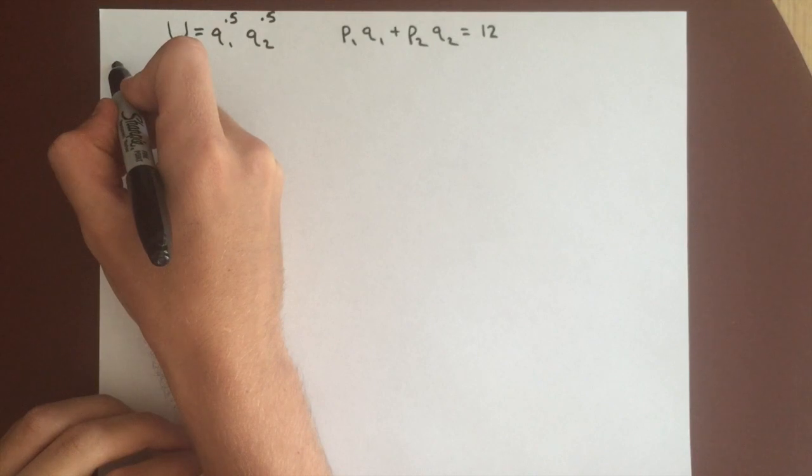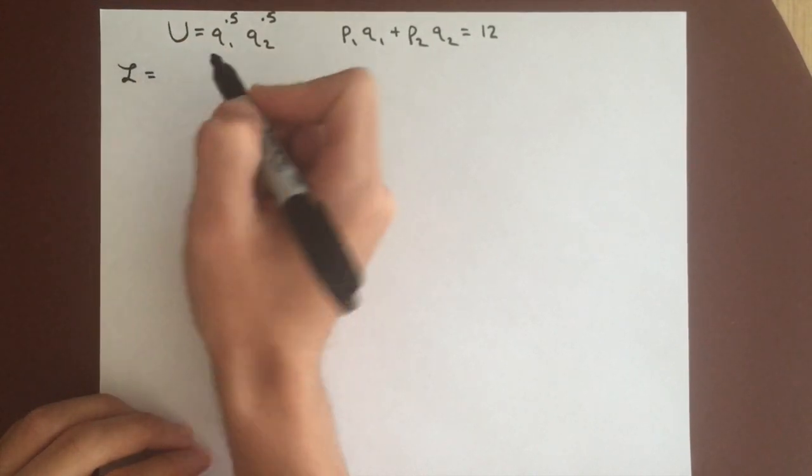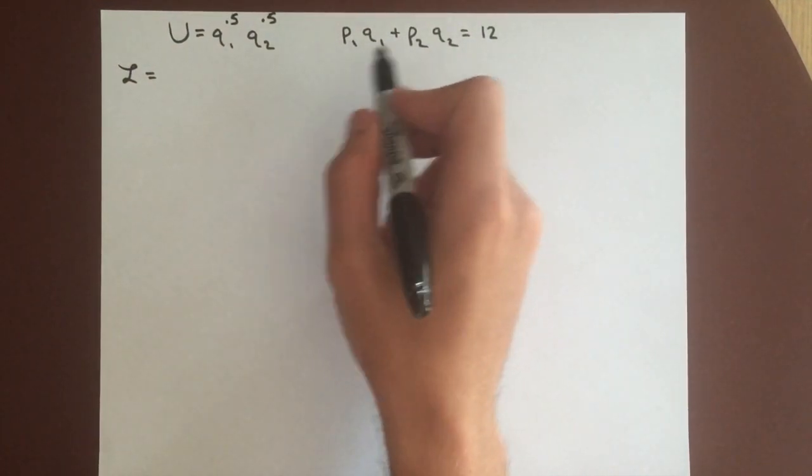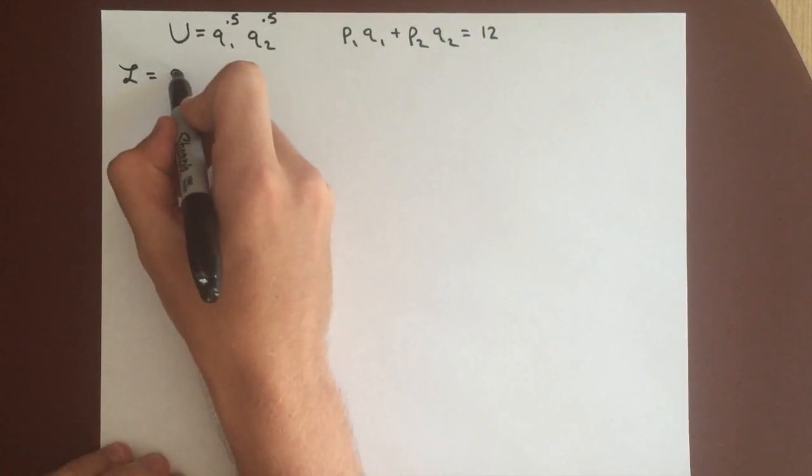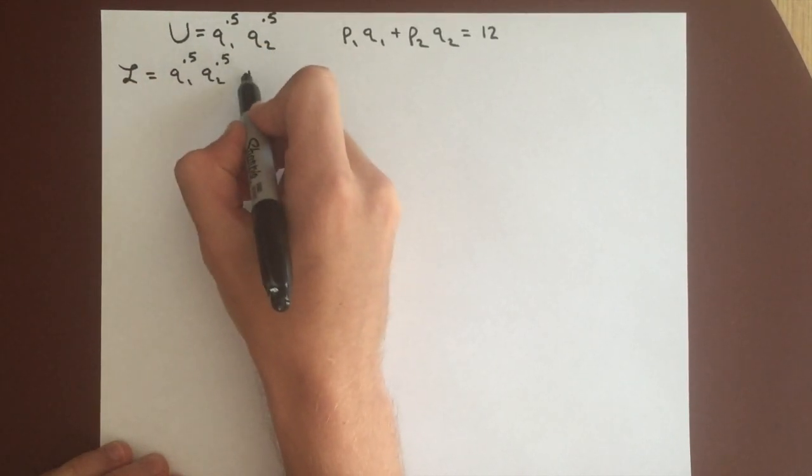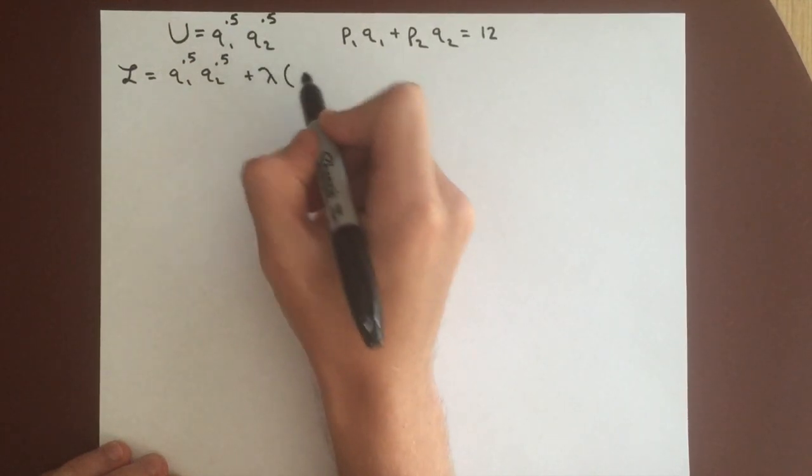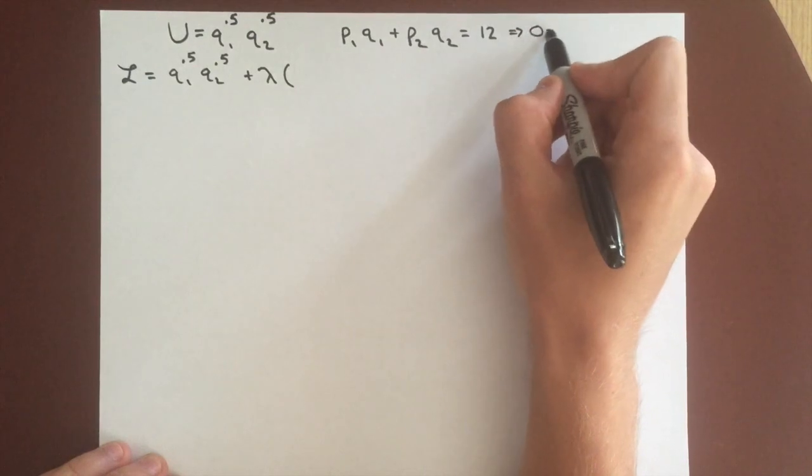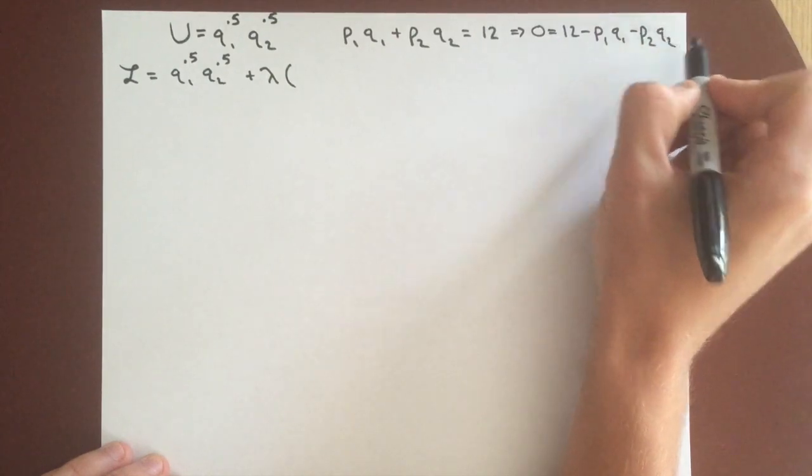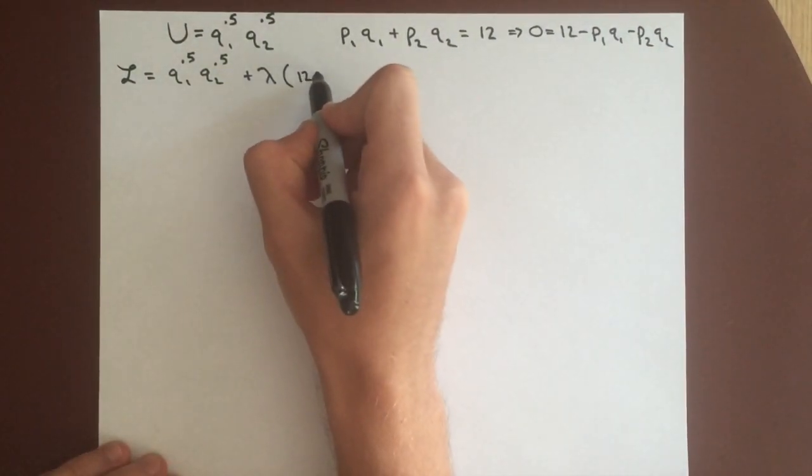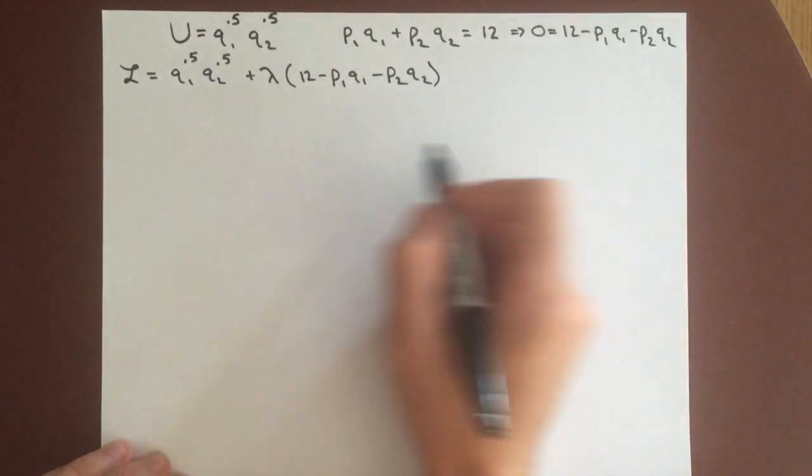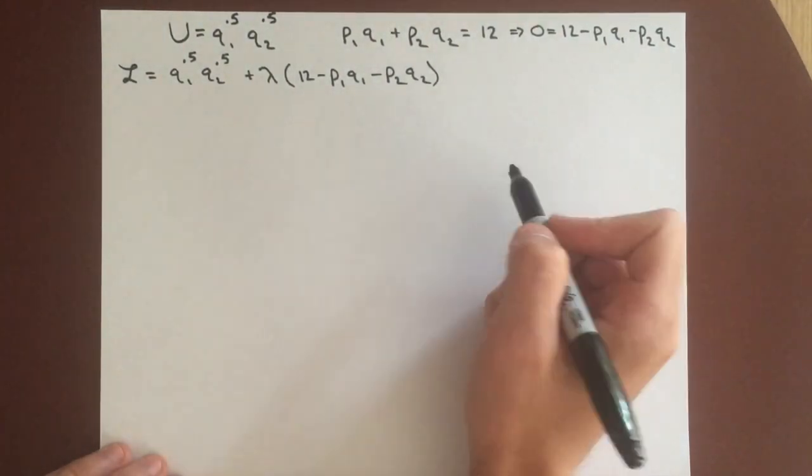We'll start by writing the Lagrangian for this because we need to maximize u at every different value of p1 and p2. So we can write Lagrangian equals q1 to the 0.5, q2 to the 0.5, and then plus lambda times, and remember we can write this as 0 equals 12 minus p1 q1 minus p2 q2. So we'll plug this in, 12 minus p1 q1 minus p2 q2. And this will be our Lagrangian for every p1 and p2 value.